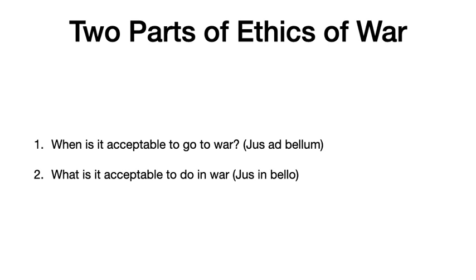After covering the Geneva Conventions, we'll turn to philosopher Anscombe, who we're going to read first. She is very interested in question two — what is acceptable conduct in war. She doesn't really think much about question one. She's discussing the Allies in World War II and grants, as any sane person would, that the Allies had good reason to go to war. But she thinks some particular things the Allies did violate question two. After Anscombe, we will read philosopher Thomas Nagel, who discusses both questions and does not think utilitarianism is a good approach for making sense of either. We'll then move to whether a Kantian theory offers a better way to understand the ethics of war.